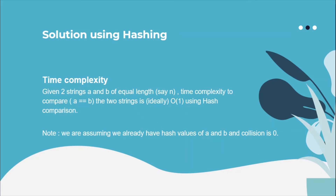Here I am assuming two things: first, that we already have the hash values, because calculating hash values takes time — we'll be learning how much time it takes. Second, that the collision is zero. What is collision? I'll be explaining that as well.